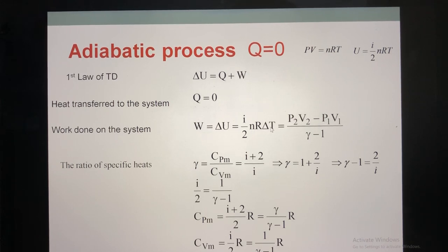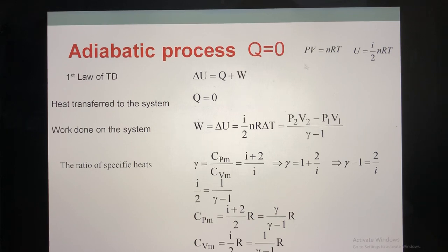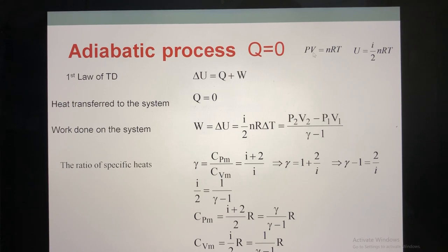And R delta T — if from the given you have information for delta T, you can apply this formula to calculate the change of internal energy or the work. But if you don't have that information, you base on the ideal gas equation PV = nRT to calculate using pressure and volume. You have nR delta T, which equals delta(PV), meaning P2V2 minus P1V1. So you can apply either formula depending on what is given.